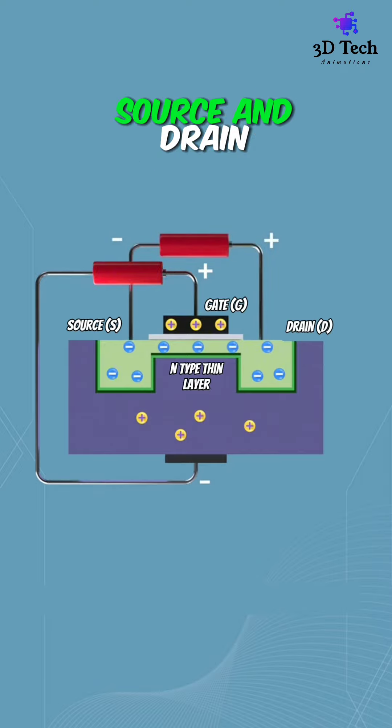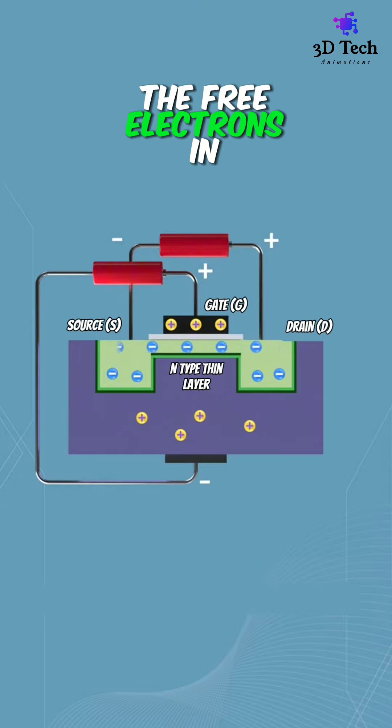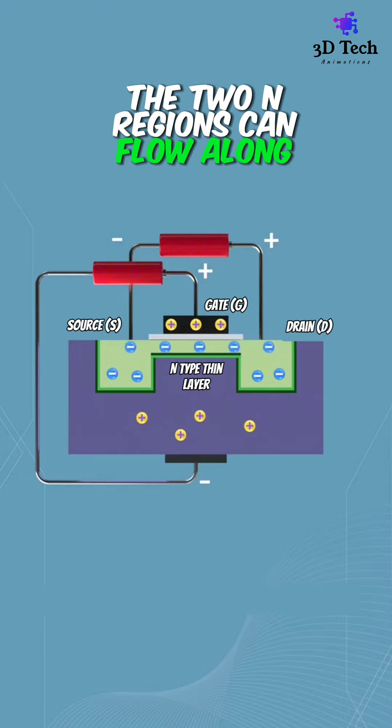Apply voltage between source and drain. The free electrons in the two N-regions can flow along the thin layer.